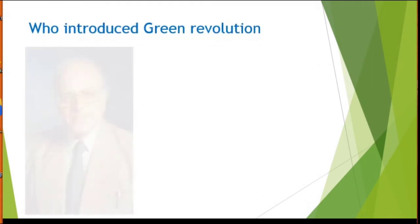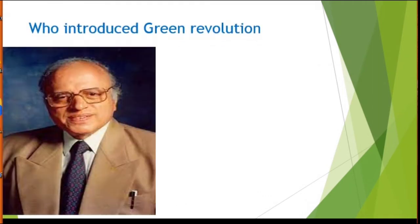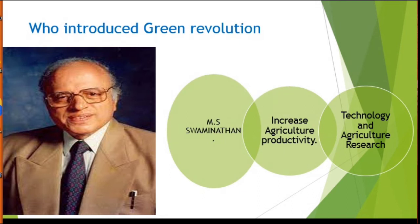Who started Green Revolution? In 1965, the government of Mrs. Indira Gandhi decided to take a major step on agriculture. Green Revolution in India was introduced by Ms. M. Swaminathan. At this stage, the Green Revolution was concerned only with wheat and rice.